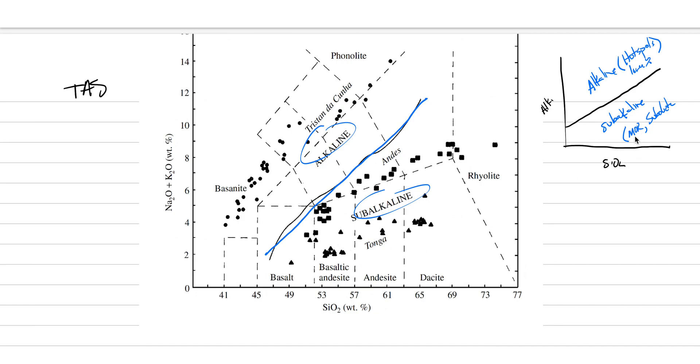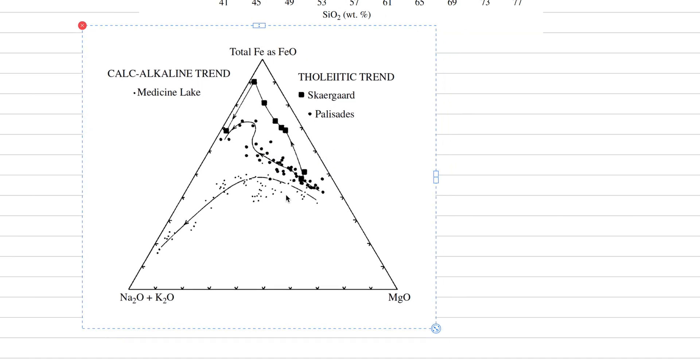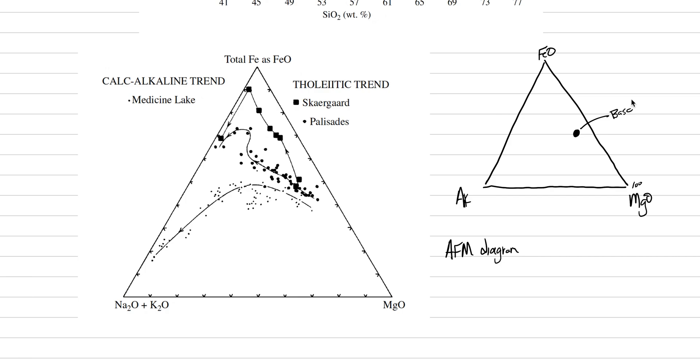The subalkaline field has mid-ocean ridge and subduction zone. We'd like to have a graph that can separate those out. You're going to draw something like this - basically a triangle. We call these ternary diagrams. This is the MgO corner, here is our alkalis ALK corner, and here is our FeO corner. This diagram is called an AFM diagram. You plot the composition of your magma relative to these three. Basalts from all tectonic environments plot right about here.